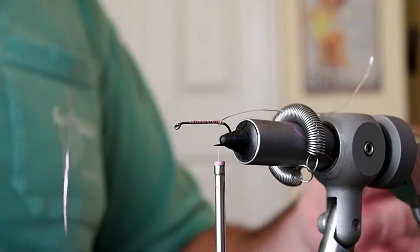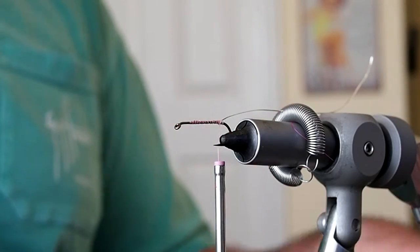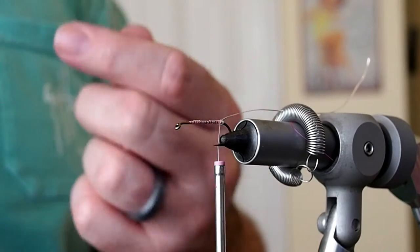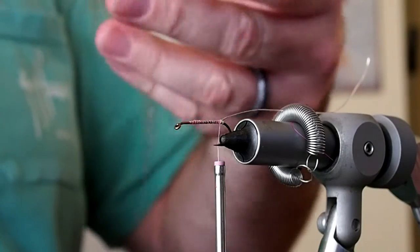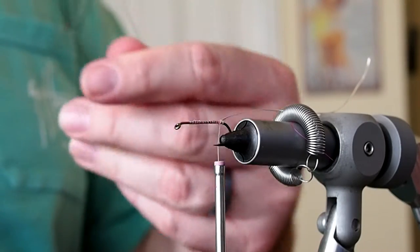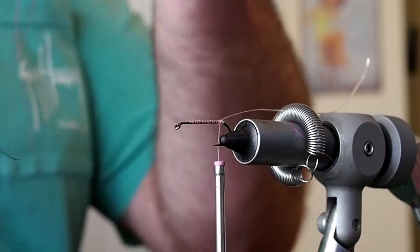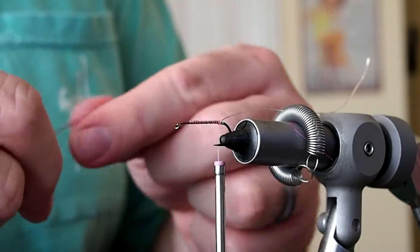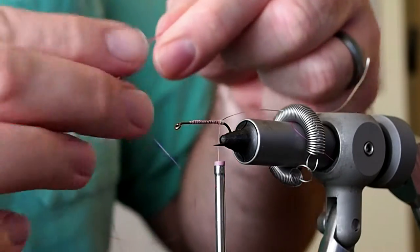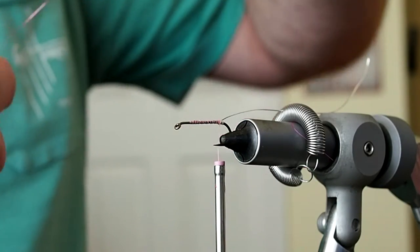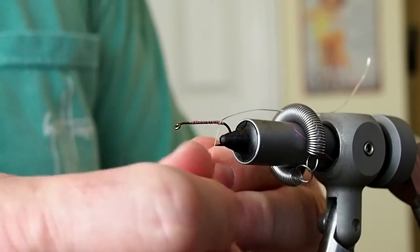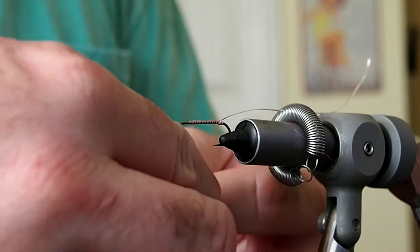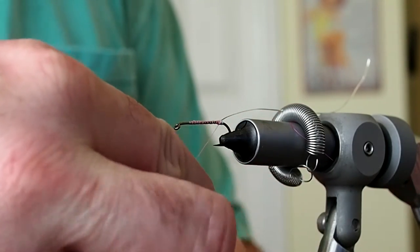And then what I like to do is just fold that in half, fold it in half one more time, and then fold that in half around your thread. And that will just help you more quickly build up a body.